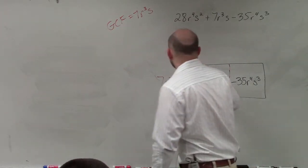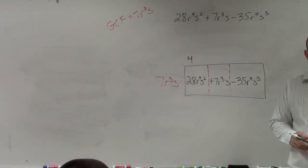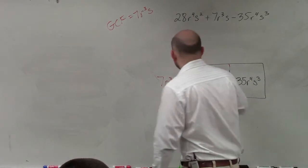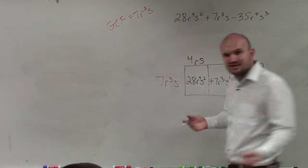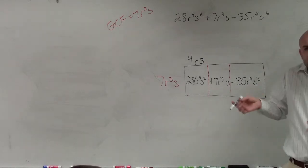4. r cubed times what gives you r to the fourth? r. And then s times what gives you s squared? s. Do you guys see how I'm basically doing that? You're just doing it one step at a time.